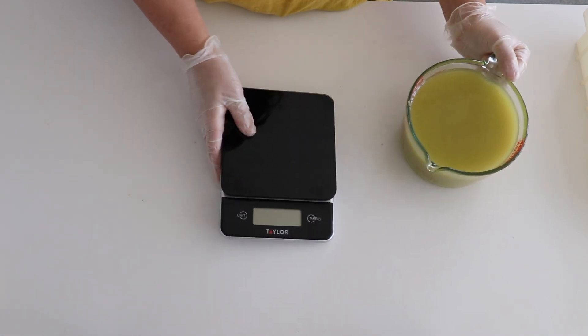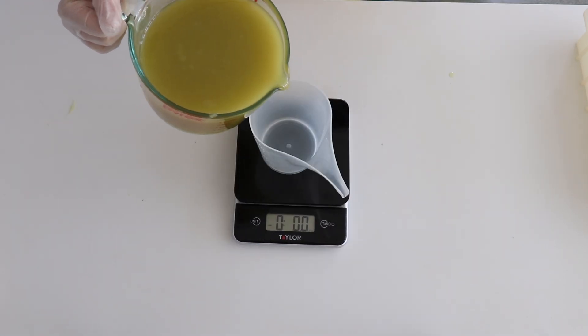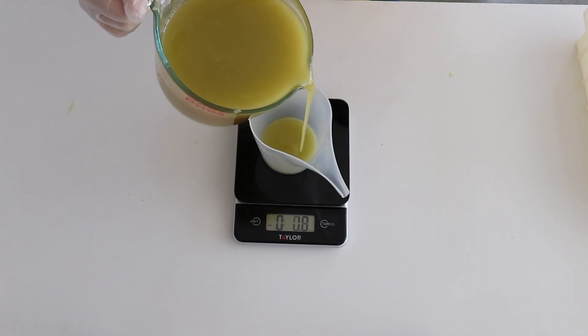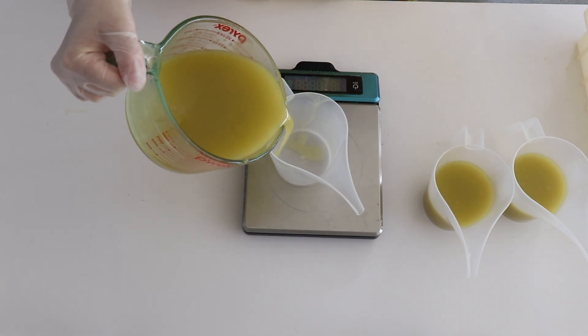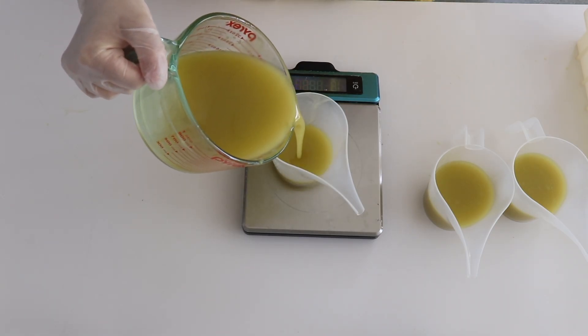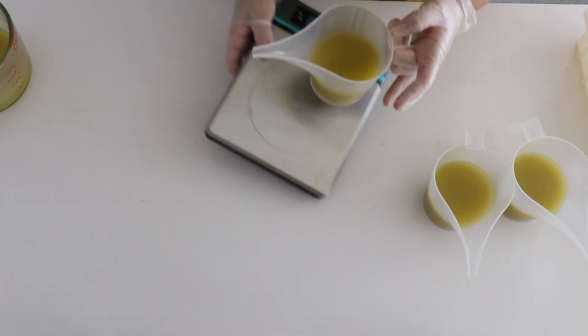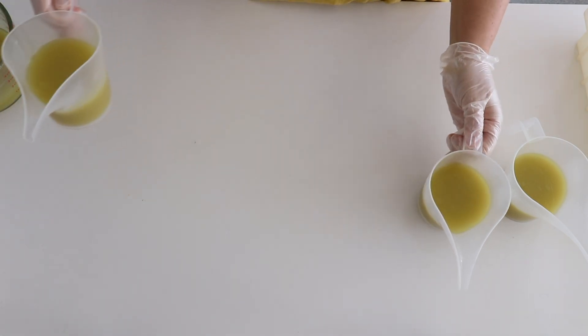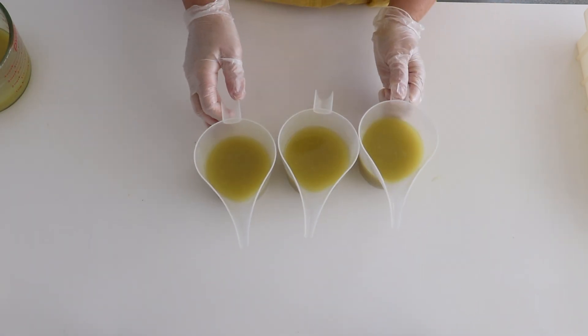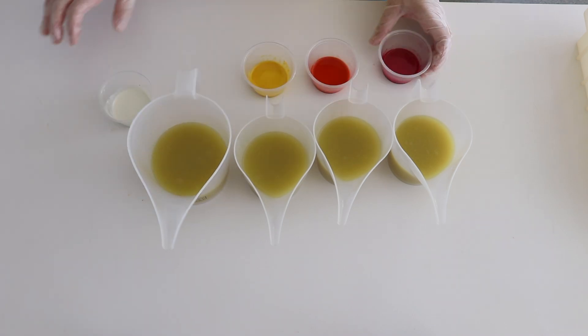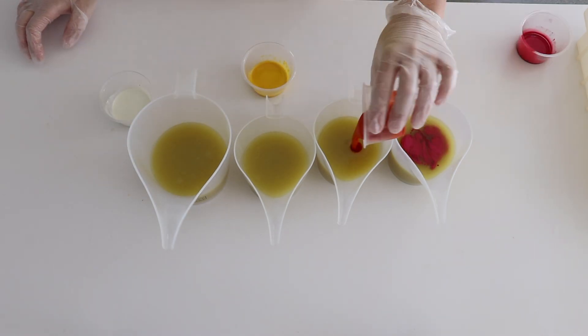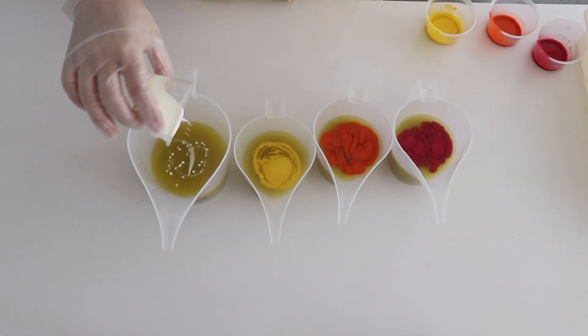Now I'm going to take a scale and weigh out eight ounces of soap. And then I'm going to do that three times. And I'll pour the rest into a fourth container. And I add the color to the three containers and the white to the one with the largest amount.